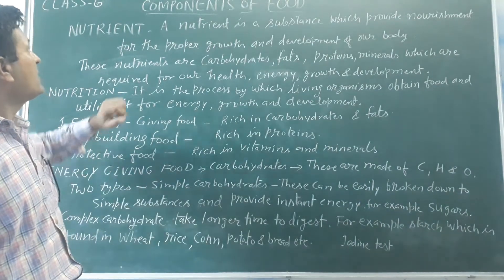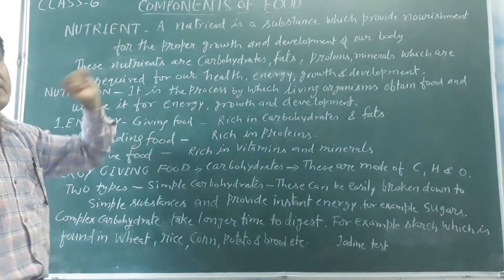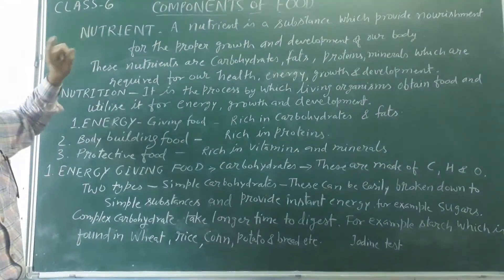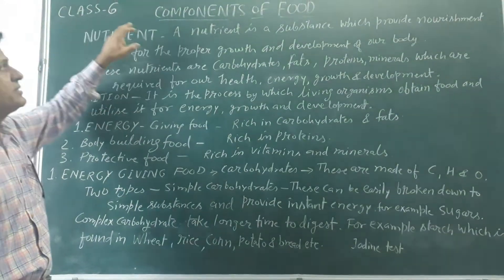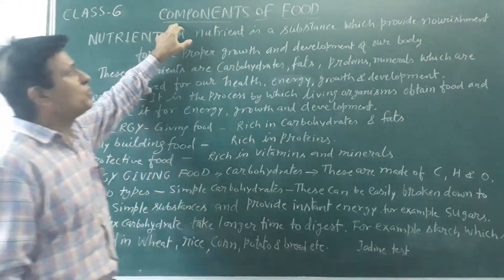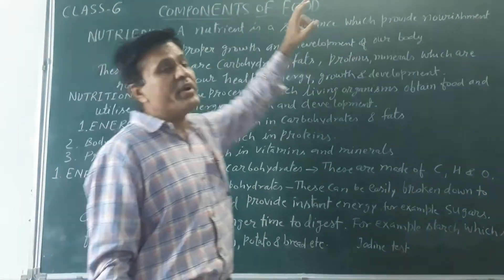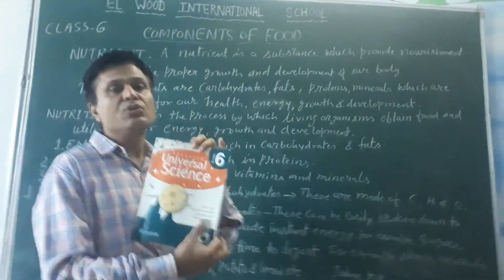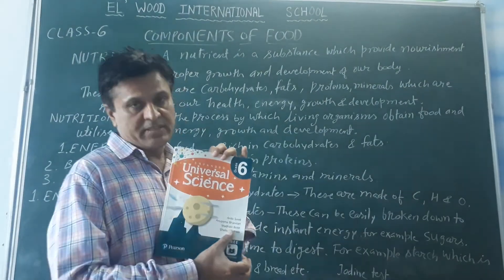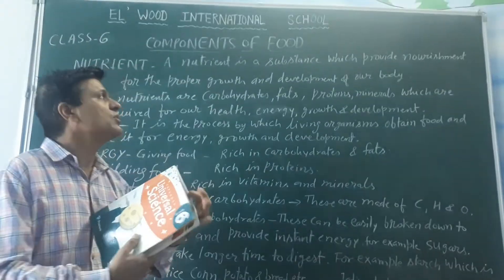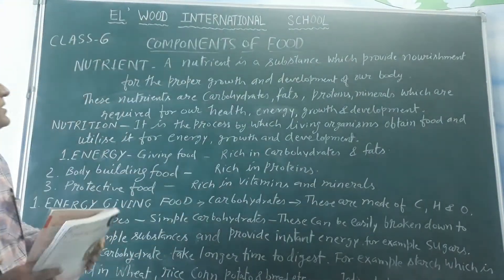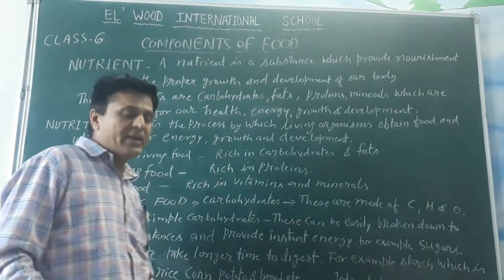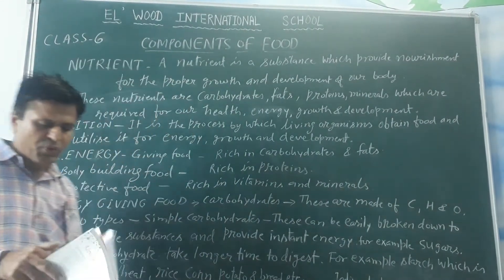Good morning students. Today we will start class 6 science, chapter 2: Components of Food. The book name is Universal Science Class 6. In this chapter we will study about the components of food.